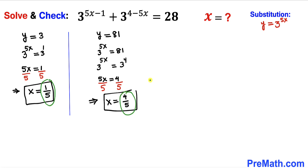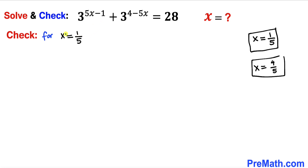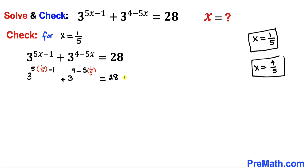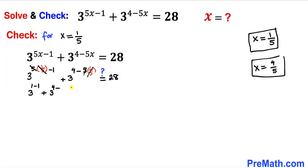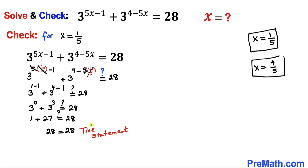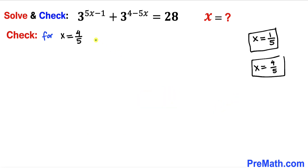Let's check x = 1/5. Replacing x with 1/5, the 5 and 1/5 cancel, giving 3^(1−1) + 3^(4−1) = 3^0 + 3^3 = 1 + 27 = 28, which equals the right hand side of 28. This is a true statement, so x = 1/5 is a valid solution.